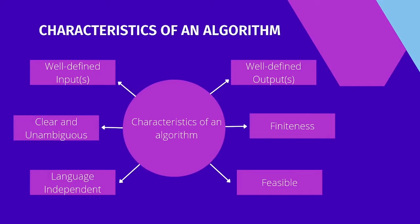Well-defined input: if an algorithm says to take inputs, it should be well-defined inputs. Well-defined output: the algorithm must clearly define what output will be yielded and it should be well-defined as well. Finiteness: the algorithm must be finite — that is, it should not end up in infinite loops or the like.